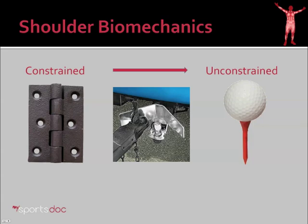Next we have a trailer and hitch. The trailer hitch, while it's somewhat constrained in that it mostly bends side to side as the truck goes around the corner, can also move a little bit up and down as the trailer goes over a bump in the road. Therefore it's a little bit less constrained than a door hinge.